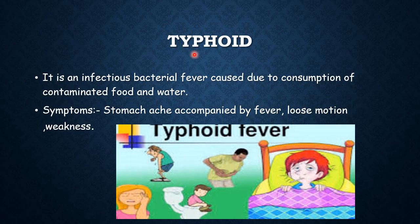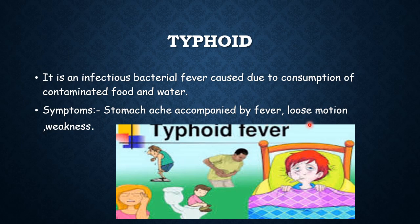The next one is typhoid. Typhoid is an infectious bacterial fever which is also caused due to the consumption of contaminated food and water. The symptoms of typhoid are stomach ache accompanied by high fever, loose motion, as well as weakness.